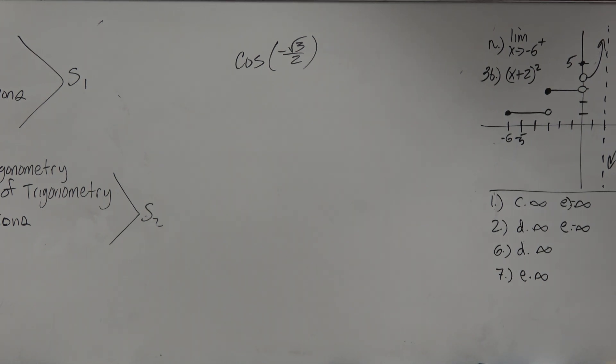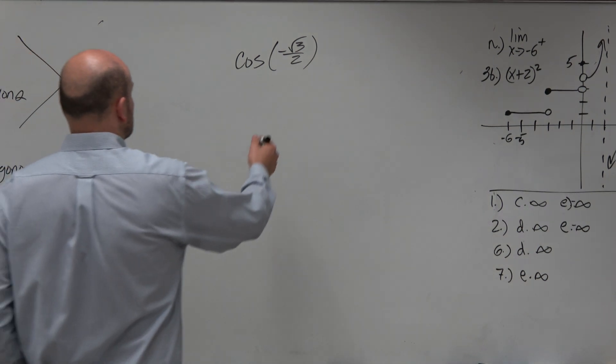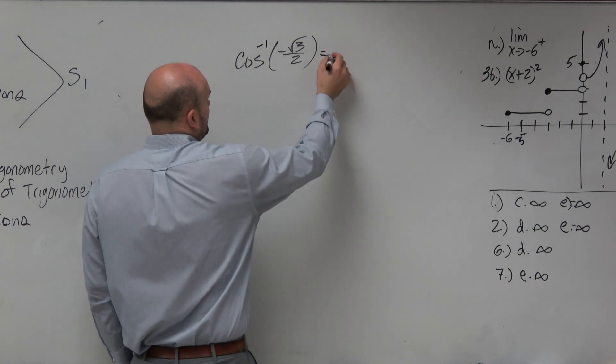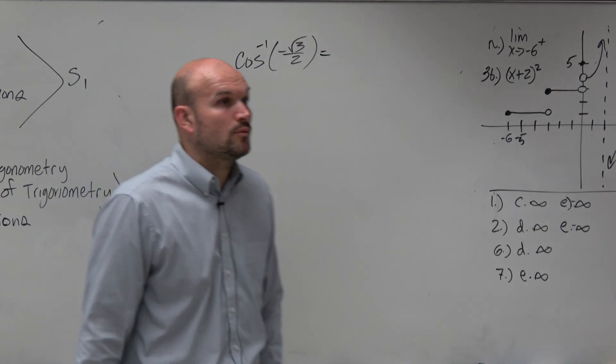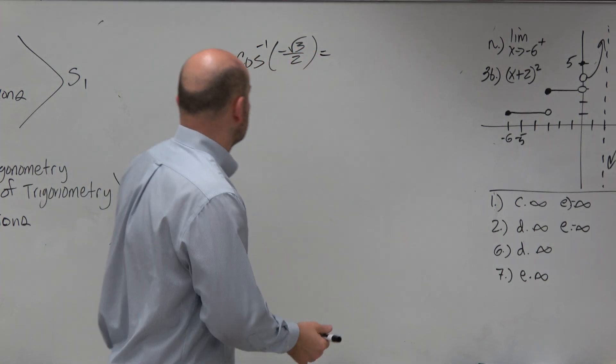You have these restrictions remembered. So this is actually finding the cosine inverse. We're looking for when is cosine equal to negative square root of 3 over 2.